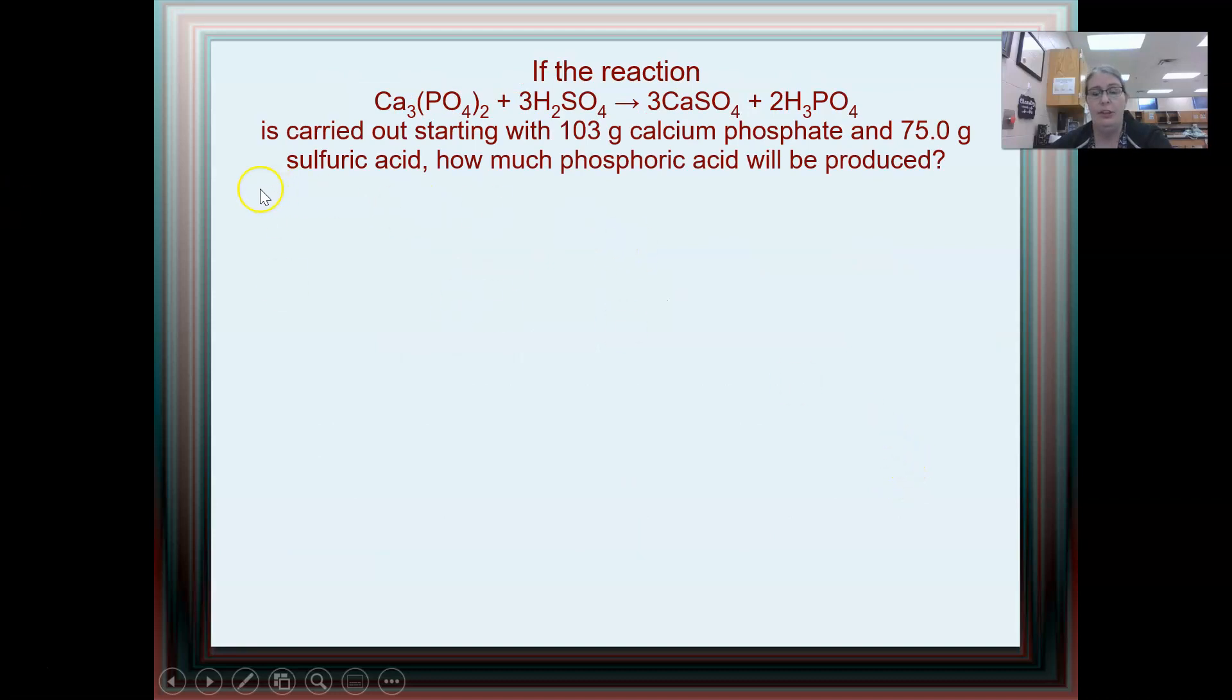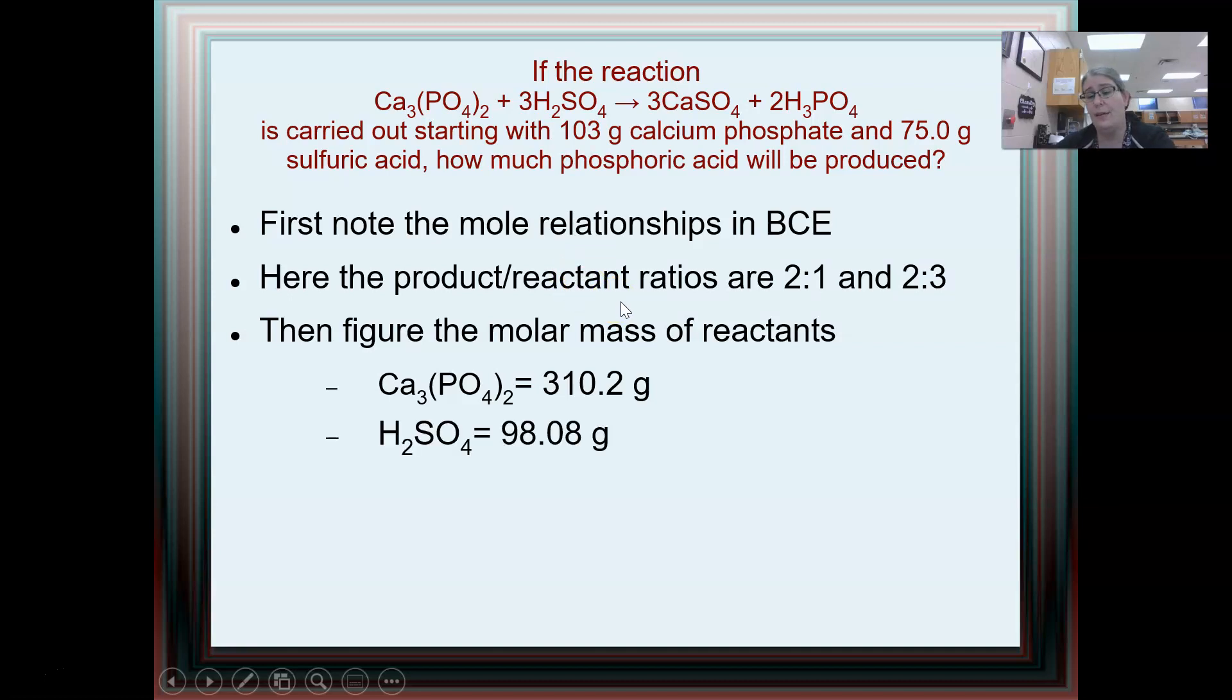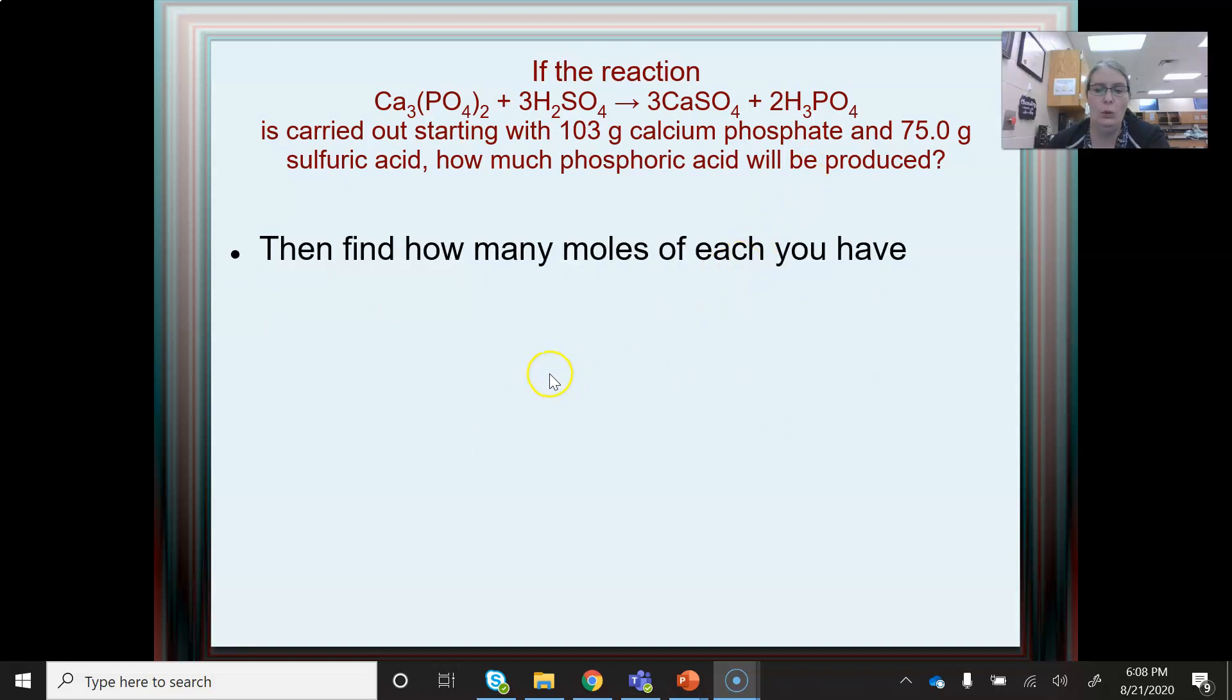So here's my problem again. We're just going to keep that on the top of the page. And we want to make sure we look at the mole ratios in the balanced chemical equation. I notice that the product to reactant ratios here are two to one and two to three, as I'm looking for the phosphoric acid. I'm of course going to need to go through moles. So I better figure out the molar mass of my reactants. Calcium phosphate, if I add that up, is 310 grams. Sulfuric acid is about 98 grams.